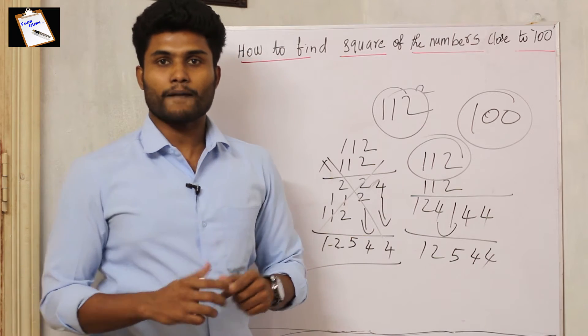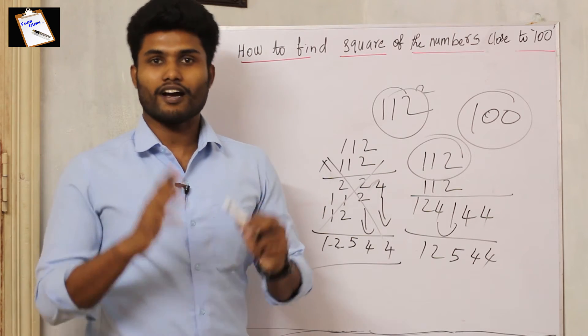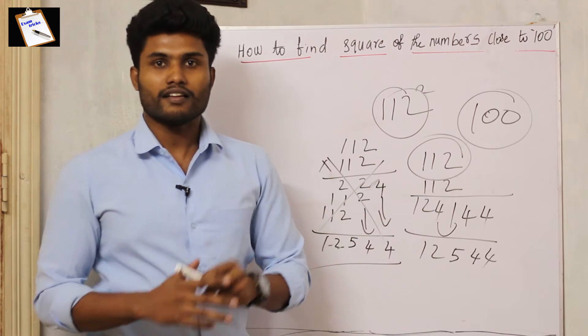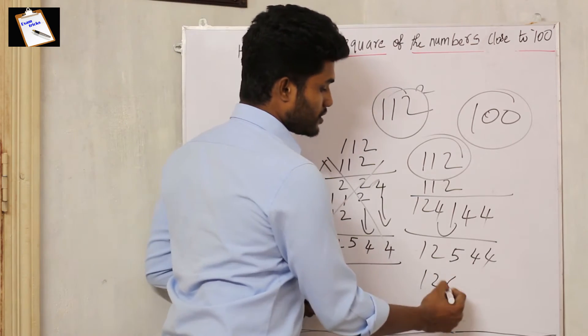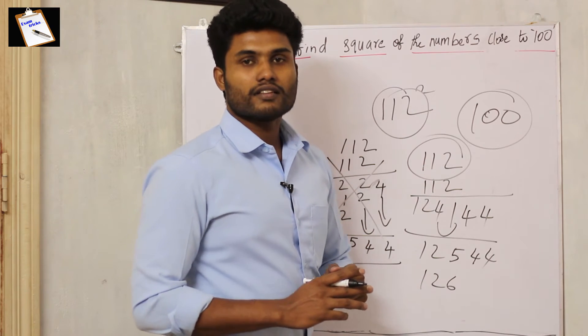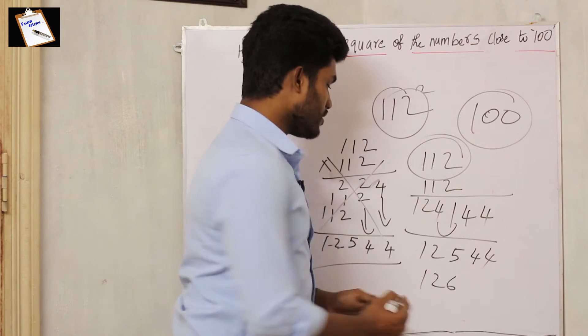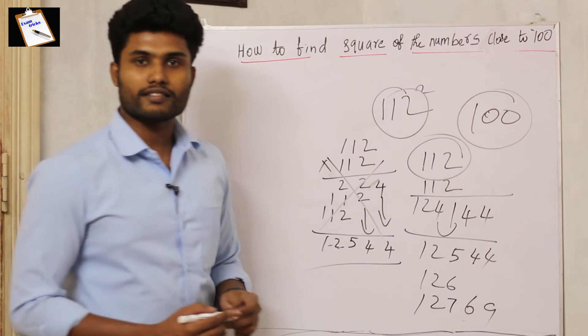113 square. What is the difference from 100 to 113? Very good, the difference is 13. Then 113 plus 13 is 126. What is 13 square? 13 square is 169. So the answer is 12769.